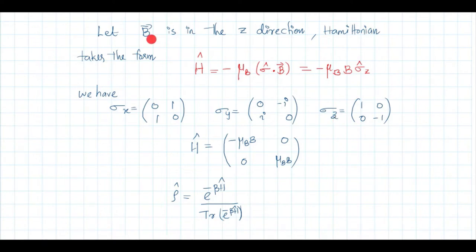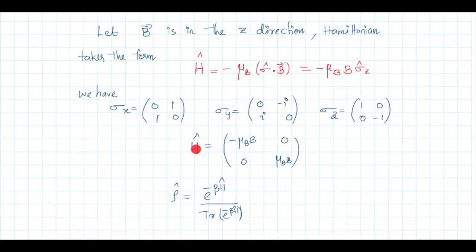That is why we choose the direction of the magnetic field along the z direction. Therefore, σ·B becomes B·σ_z. So the Hamiltonian operator is H = -μ_B B multiplied with σ_z, giving the matrix [[-μ_B B, 0],[0, μ_B B]]. This is the Hamiltonian operator of the system — a single particle (electron) with magnetic moment μ_B and spin ℏσ/2.